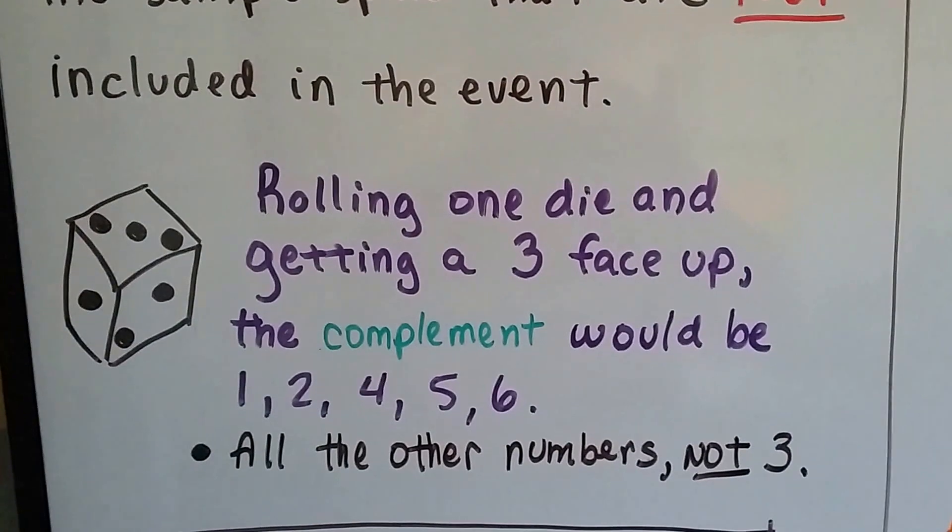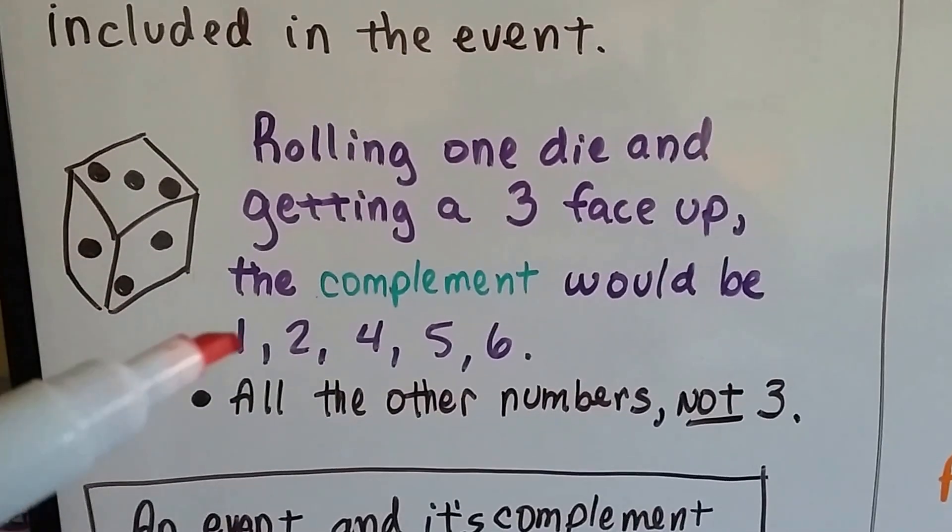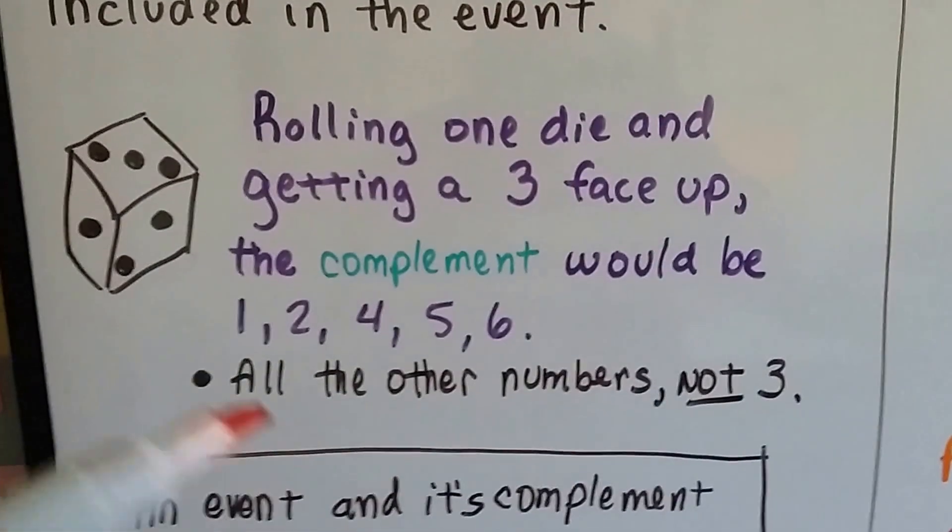Rolling one die and getting a 3 face up, the complement would be 1, 2, 4, 5, or 6—all the numbers that are not 3.